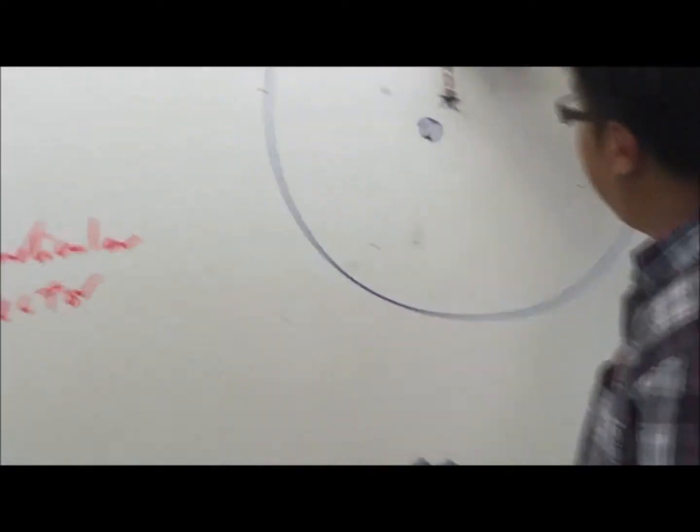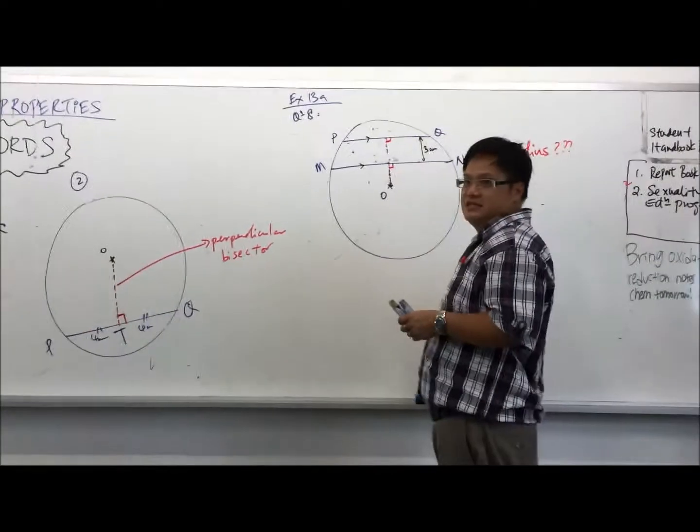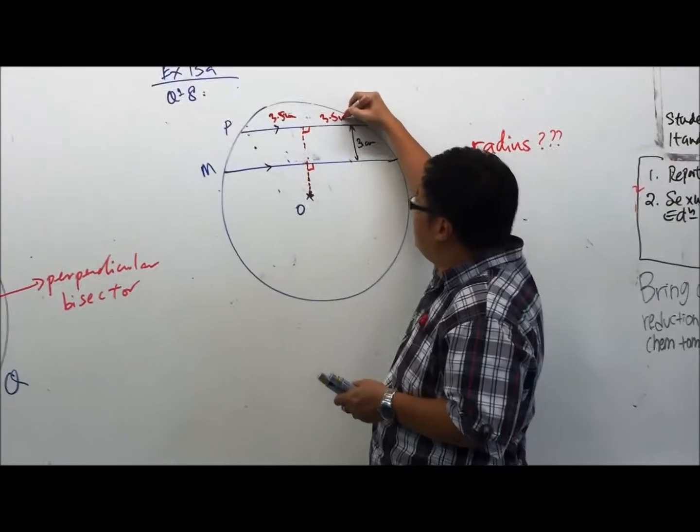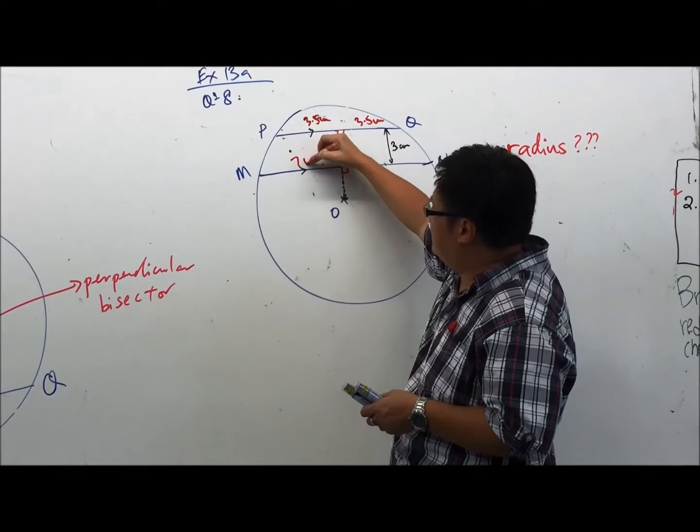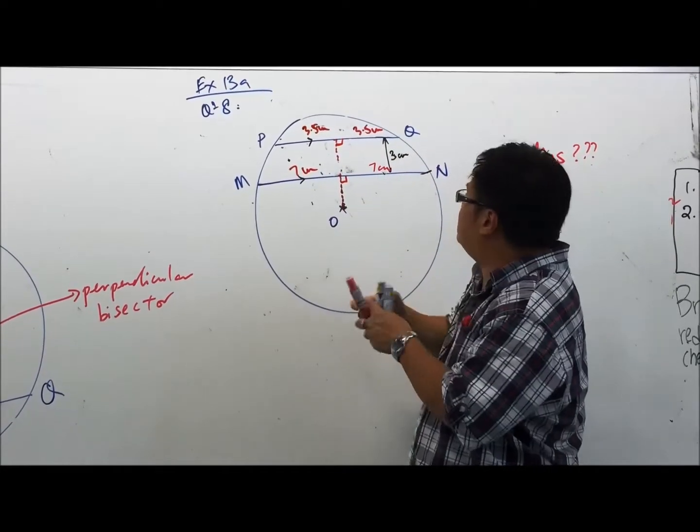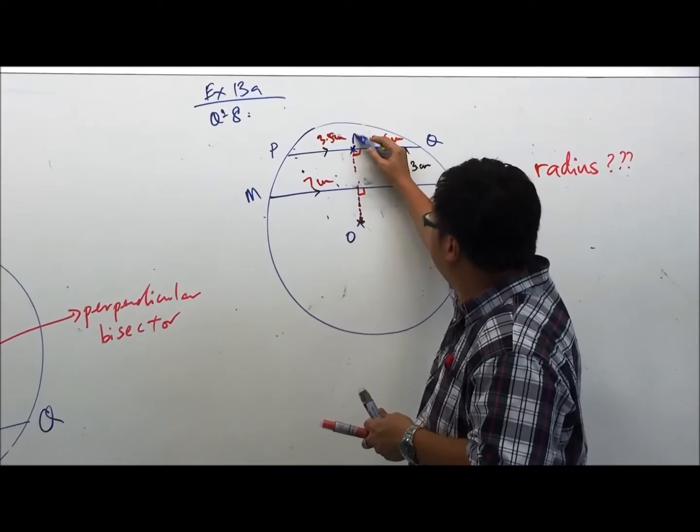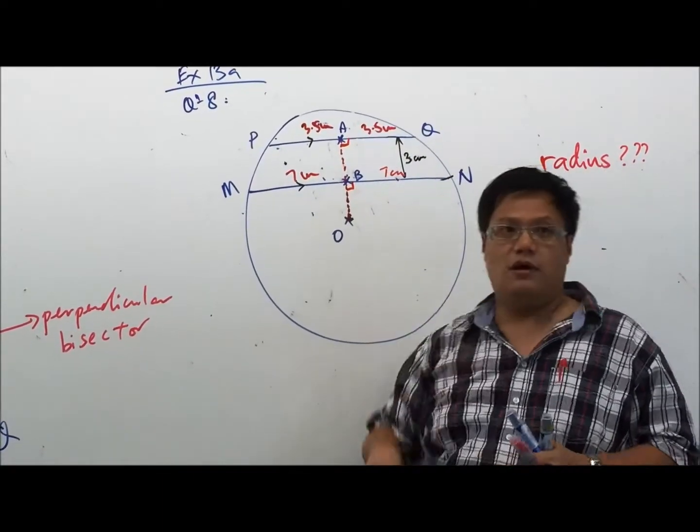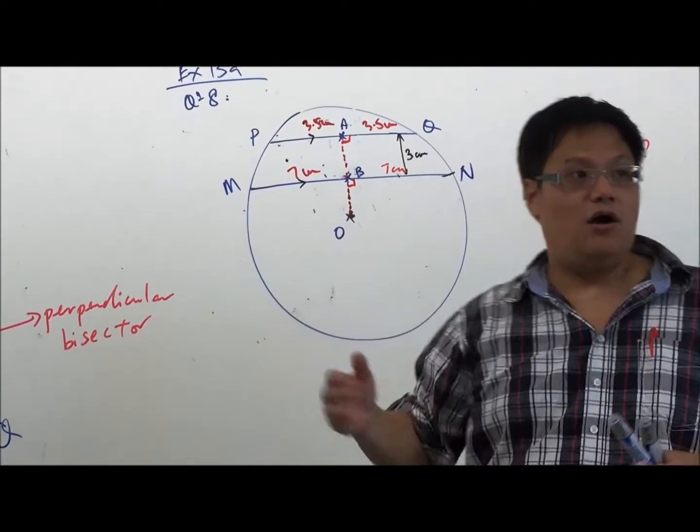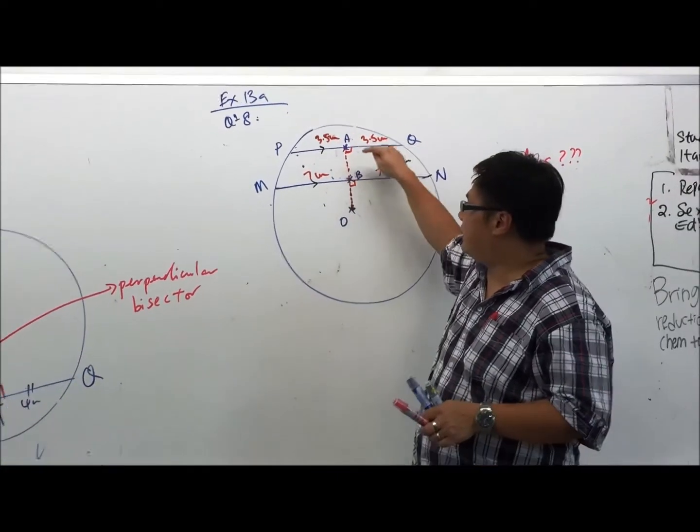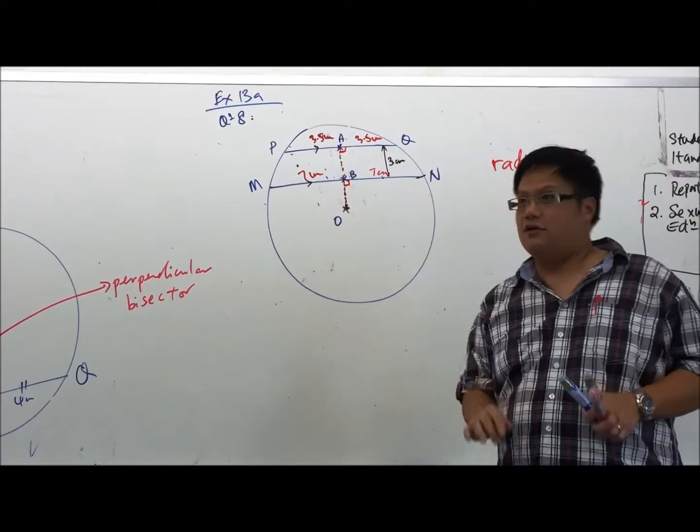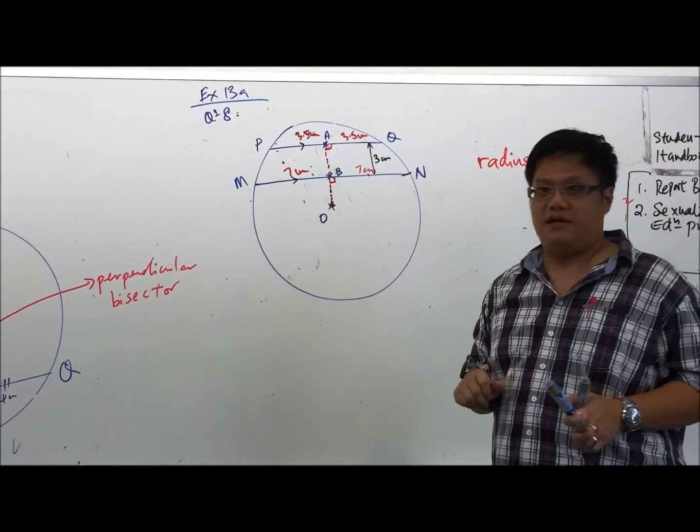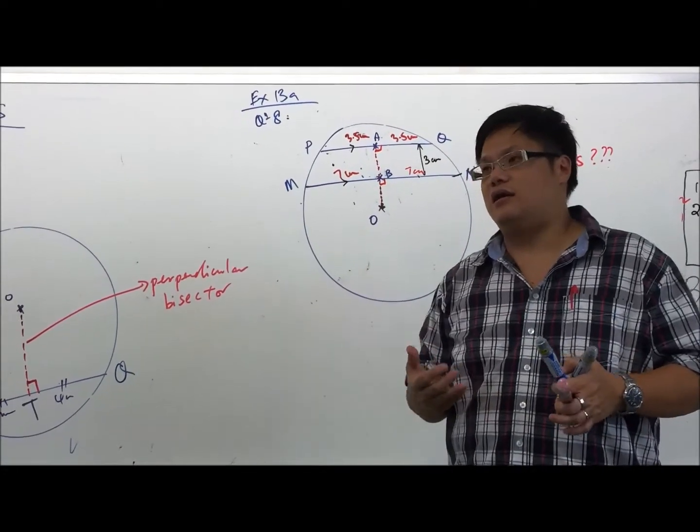What we have over here, instead of 7 cm and 14 cm, I will have this portion here. This is 3.5 cm. This is 3.5 cm. This is 7 cm. This is 7 cm. I call this point A and B.